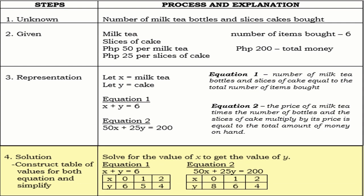Solving by graphical method. Solve for the value of X to get the value of Y. For equation 1, when X is 0, Y is 6; when X is 1, Y is 5; and when X is 2, Y is 4. In the same manner, for equation 2, which is 50X plus 25Y is equal to 200: when X is 0, Y is 8; when X is 1, Y is 6; and when X is 2, Y is 4.